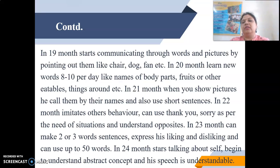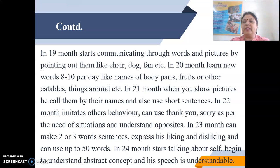In the 21st month, when shown pictures, the child calls them by their names and also uses short sentences. In the 22nd month, they imitate others' behavior and can use 'thank you' and 'sorry' as needed by the situation, and understand opposites. In the 23rd month, they can make 2 or 3 word sentences and express their liking and disliking, and can use up to 15 words. In the 24th month, they start talking about themselves, begin to understand abstract concepts, and their speech becomes understandable.